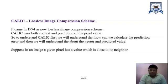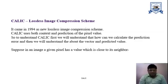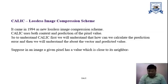KALIC uses both context and prediction of the pixel value. In the first part we try to find out the predicted value, and in the second part we try to find out the vector on the basis of those predicted values. To understand KALIC, we will first understand how to calculate the prediction error and then understand the vector and the predicted values.